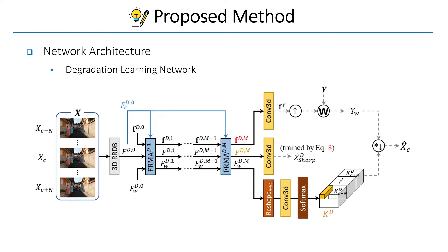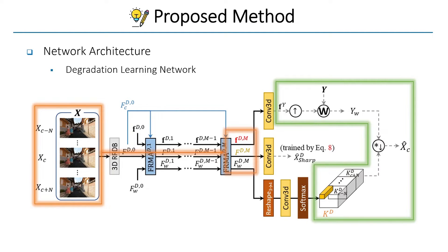The degradation learning network takes a blurry low-resolution sequence as input and predicts a motion-aware spatio-temporally variant degradation kernel for each pixel, along with the optical flow in the clean high-resolution sequence, through stacked FRMA blocks. Then, the network applies flow-guided dynamic filtering with the predicted kernel and optical flow on the clean high-resolution sequence to reconstruct the blurry low-resolution center frame, which is then used to calculate the reconstruction loss.